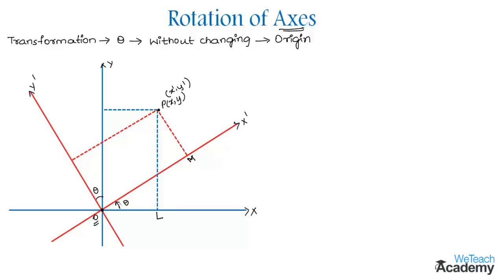The angle between two straight lines is equal to the angle between their perpendiculars. Hence we can say that angle LPM equals angle x-o-x-dash equals theta.